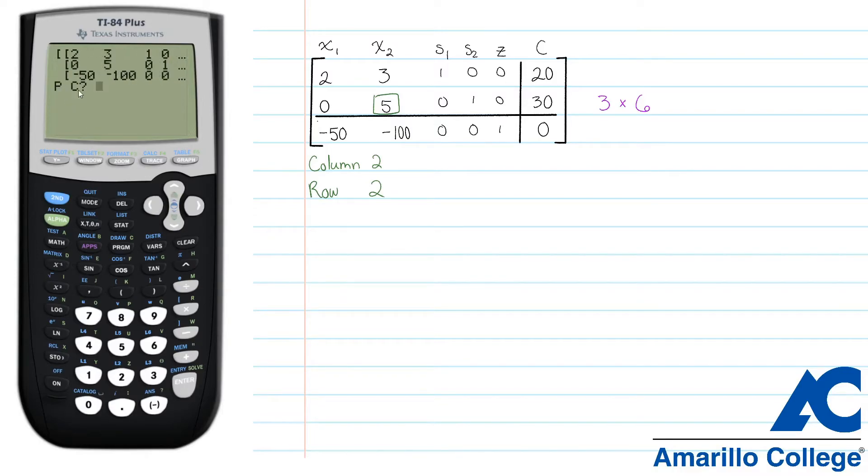It will ask you PC. This stands for pivot column, and we're just going to put in the two numbers we found, column two and row two. The program will pivot our matrix for us and show us a result, which is always another simplex tableau.